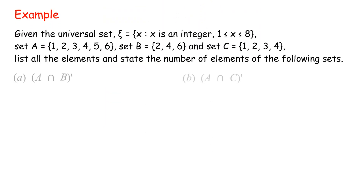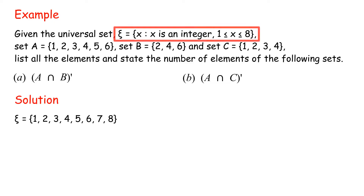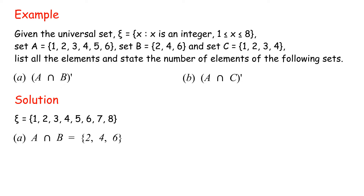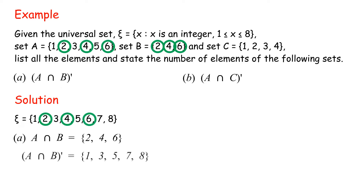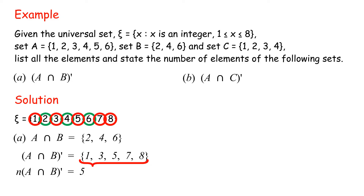Example: Given the universal set equals {x : x is an integer, 1 ≤ x ≤ 8}. Set A = {1, 2, 3, 4, 5, 6}, set B = {2, 4, 6}, and set C = {1, 2, 3, 4}. Solution: Universal set = {1, 2, 3, 4, 5, 6, 7, 8}. A: A intersect B = {2, 4, 6}. Complement of (A intersect B) = {1, 3, 5, 7, 8}. Number of elements of complement of (A intersect B) = 5.